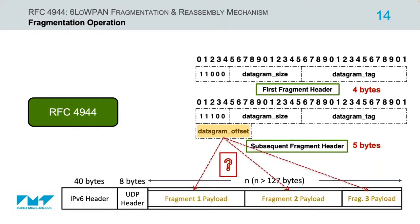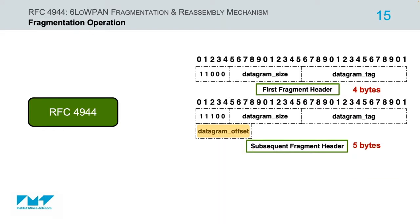In other words, the datagram offset identifies the relative position of the received link-layer fragment from the beginning of the payload datagram. Since fragments may arrive out of sequence at the receiver, the datagram offset field is used to place the received fragment back in its original position. This field allows out-of-sequence delivery of fragments.